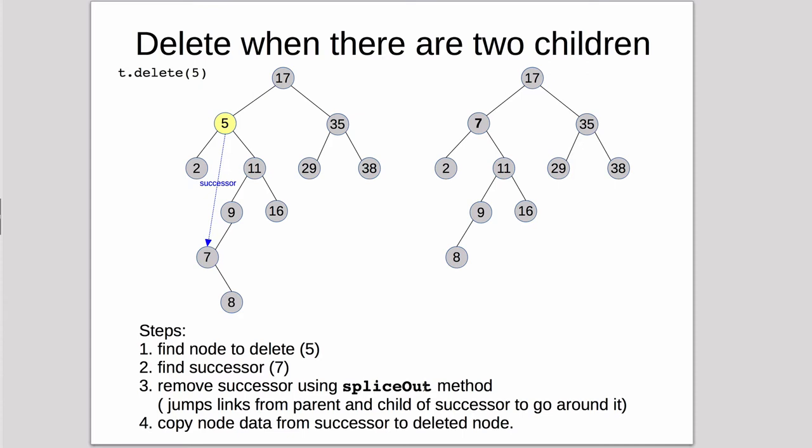And that special method, since the normal remove, it finds a node, we already know where it is, so splice out, all it does is splice the links around the successor. And then we copy the node data from the successor and key to the node that we're going to delete.